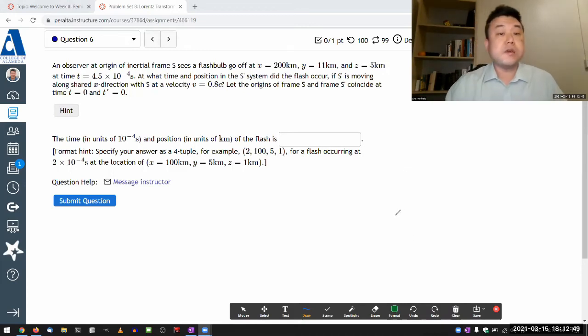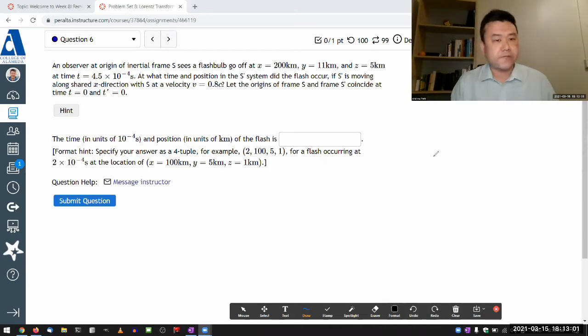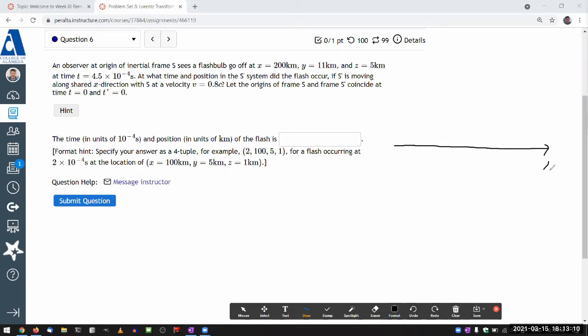So this is the question. It says an observer at origin of an inertial frame S. It's talking about a reference frame, labeling them even. So let me draw a space-time axis for these reference frames.